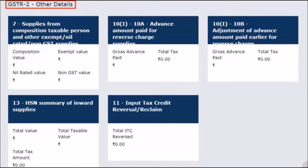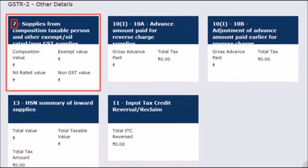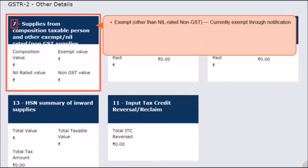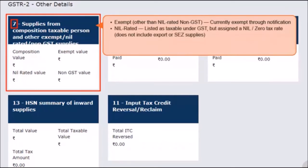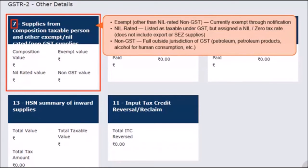Next is the GSTR2 Other Details block, where summary details for the tax period are to be reported. The first tile includes a summary of intra-state inward supplies from composition dealers and both intra-state and inter-state inward supplies of goods and services that are either exempt, nil-rated, or non-GST. Exempt supplies are those currently exempt through notification. Nil-rated means goods or services listed as taxable under the GST regime but assigned a nil or zero rate of tax. This does not include zero-rated supplies such as exports or SEZ supplies as notified under the IGST law. Non-GST supplies are goods and services that fall outside the jurisdiction of GST, such as petroleum products and alcohol for human consumption.